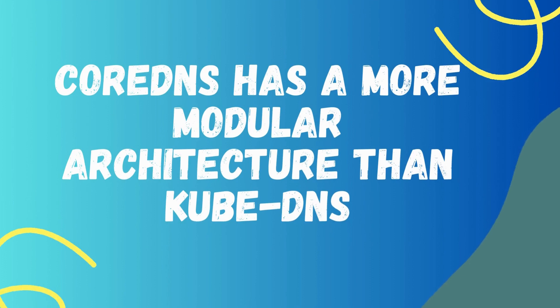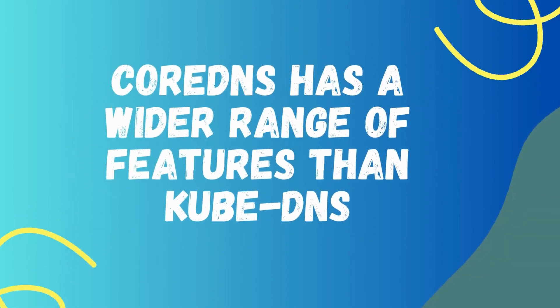Point number five: CoreDNS has a more modular architecture than KubeDNS. This makes it easier to extend and customize. CoreDNS has a more modular architecture than KubeDNS, making it easier to add new features and customize the DNS to meet specific needs. That is the main reason CoreDNS is more modular in architecture.